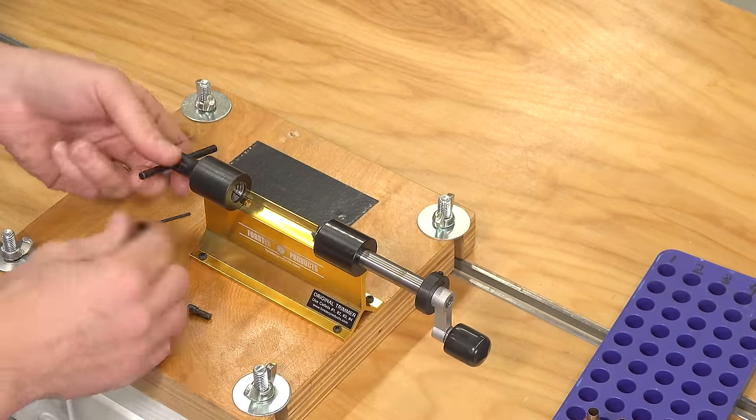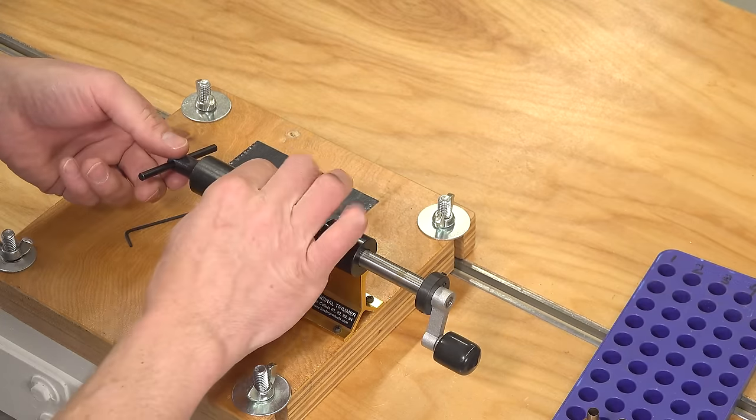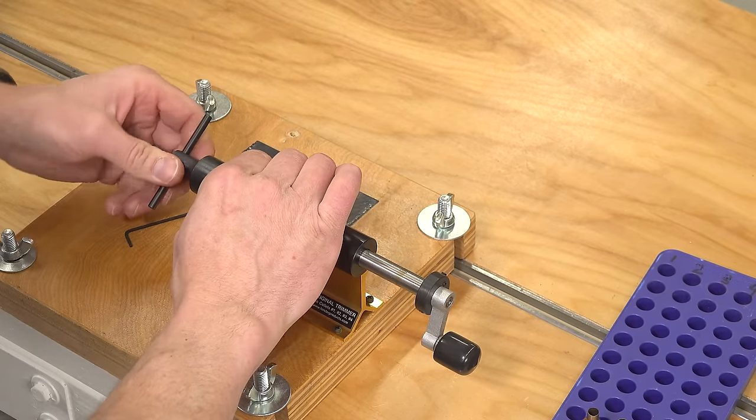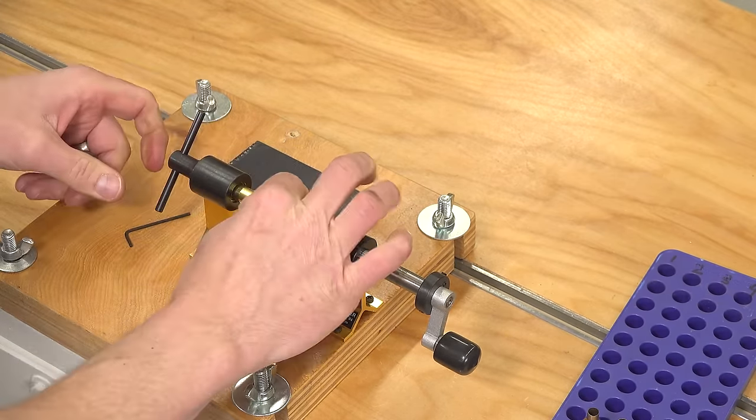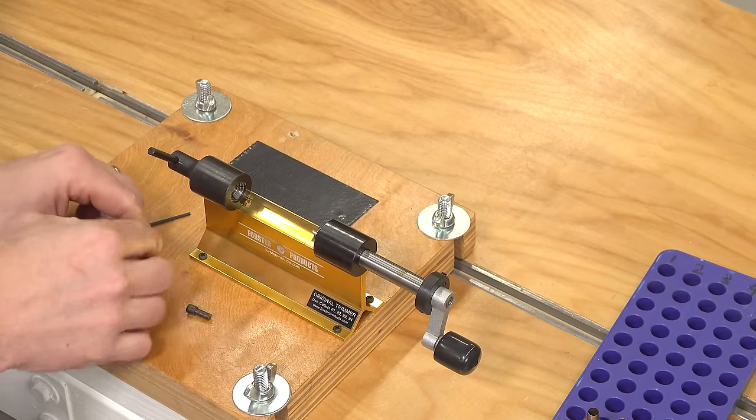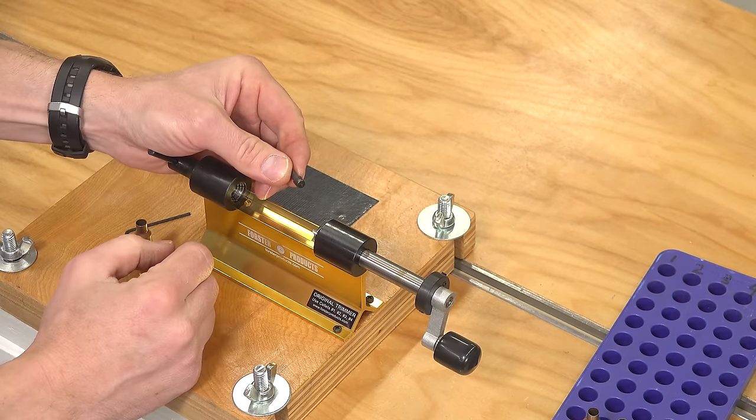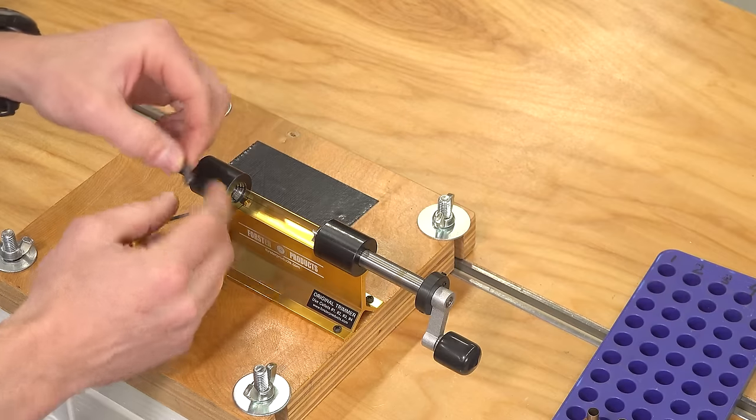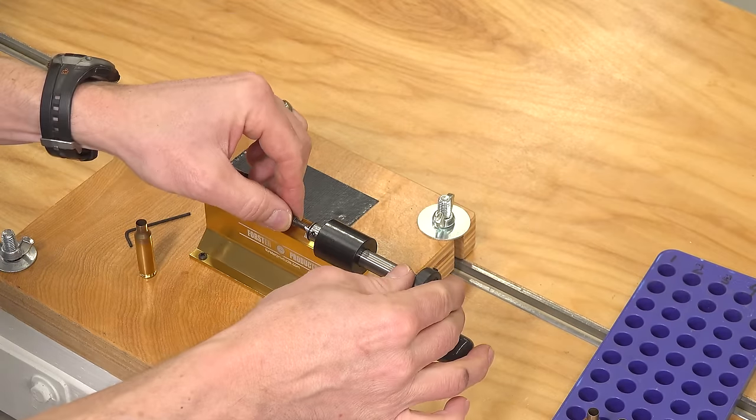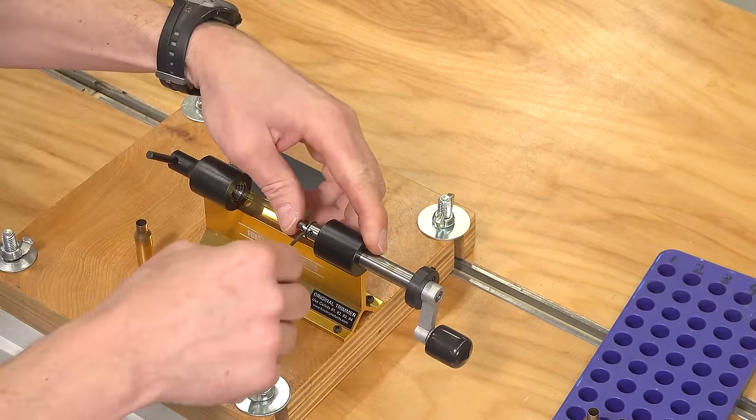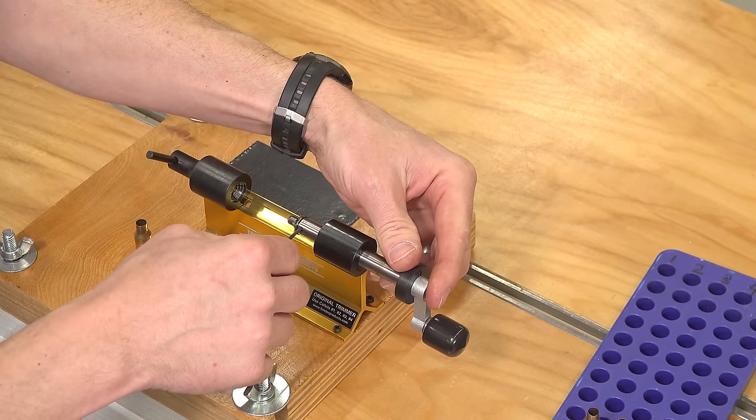Pull this out of the way and we'll just confirm that we have a nice secure clamp on the case, which we absolutely do. The next thing we need to do is install the appropriate pilot. This is pilot number 26 which is going to be appropriate for this particular Lapua 6.5 Creedmoor case.